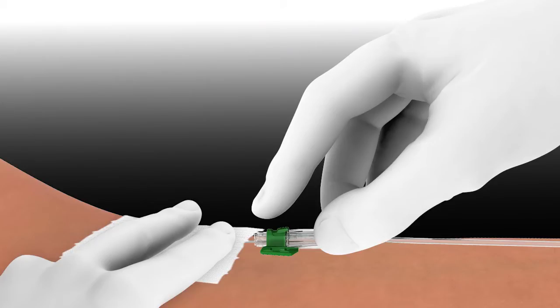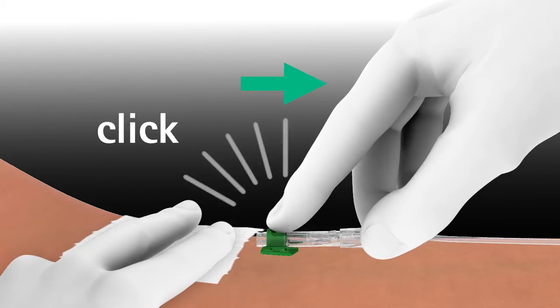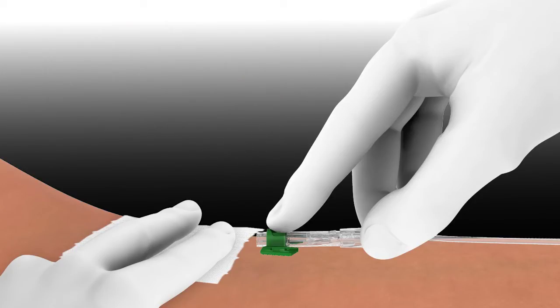Here is how the safety mechanism is activated. Begin by pressing on the button located on top of the device with the index finger. Then pull the hub backwards with the thumb and middle finger until an audible click is heard. The click sound confirms that the needle is completely and permanently retracted.